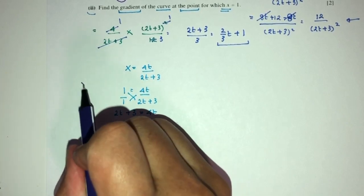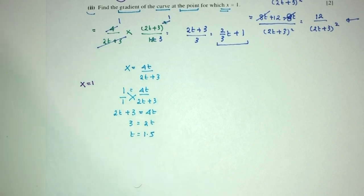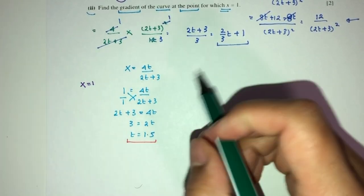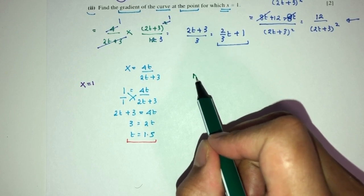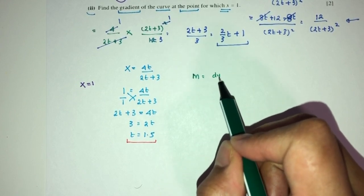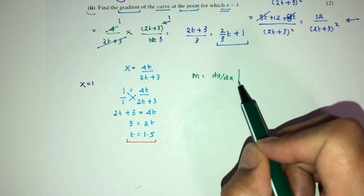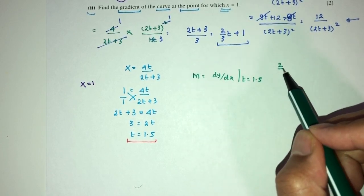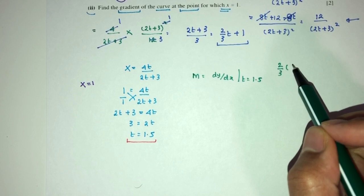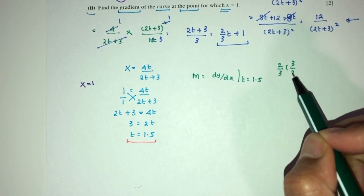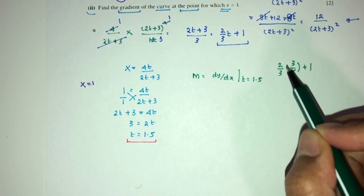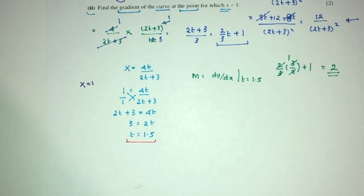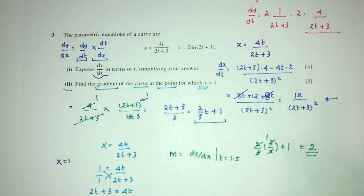So x, we know it is 1. We have to find the corresponding value of t, so we can replace back in my dy/dx to find the gradient. Again, gradient is just dy/dx. And the value of t is equal to 1.5, so we can replace this. Here you have 2/3 times 1.5 is 3/2 plus 1. That will be 1. 1 plus 1 is just the value of 2. And this is the answer for part 2 of your question, and question number 3.